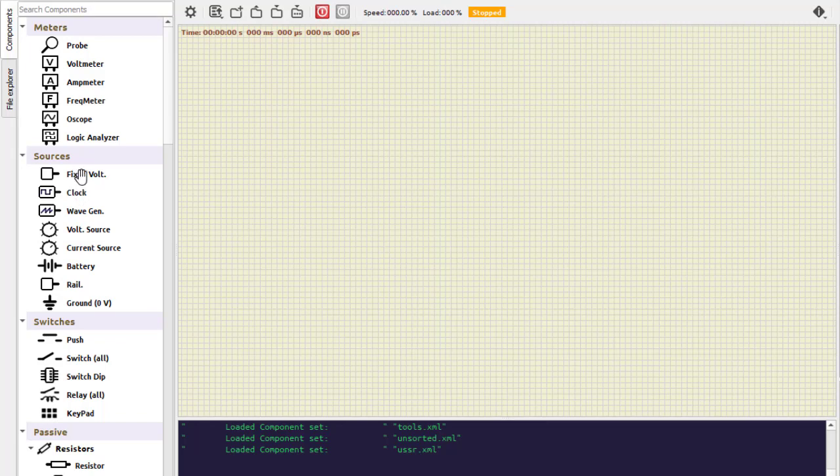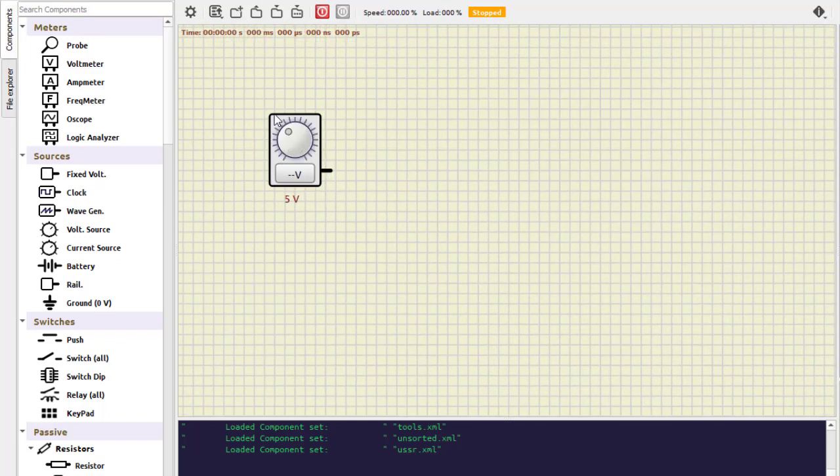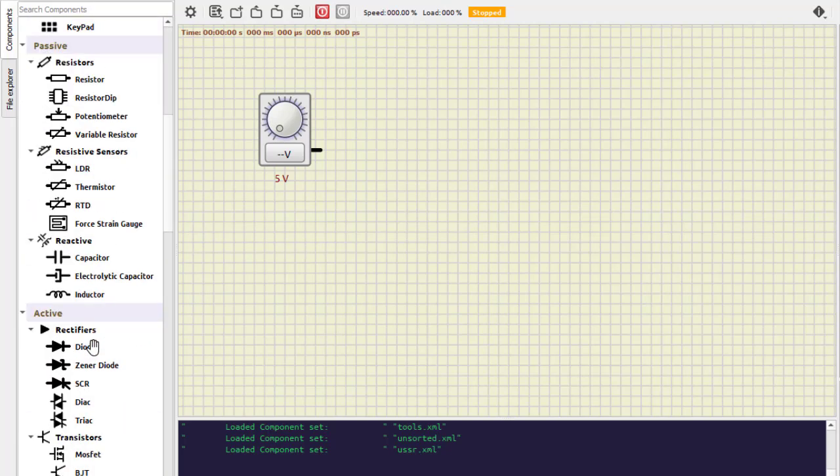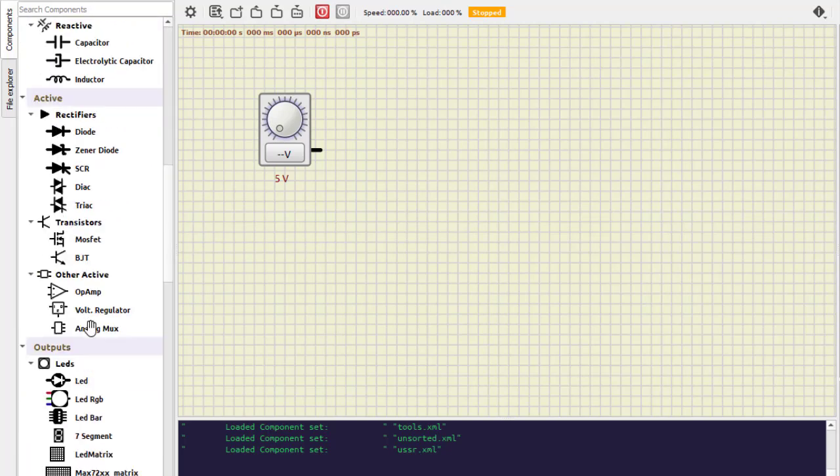The first is we select this input power supply, not this one, this one. So the input power supply, a variable source. Then we need op-amp. So we get the op-amp from this point. Here we have this op-amp.